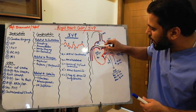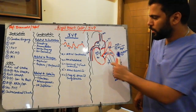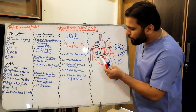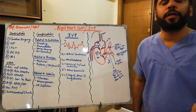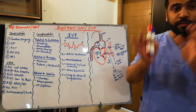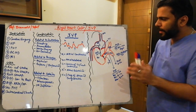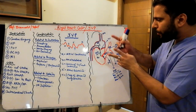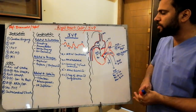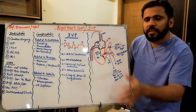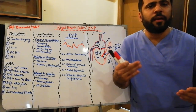Advancing the catheter into the RV, normal RV systolic pressure is 15 to 30 mmHg. The diastolic pressure of RV should be the same as RA, because in diastole the tricuspid valve remains open. If the diastolic pressures of RA and RV are not the same, it means there is a gradient between RA and RV, indicating stenosis at the tricuspid valve.